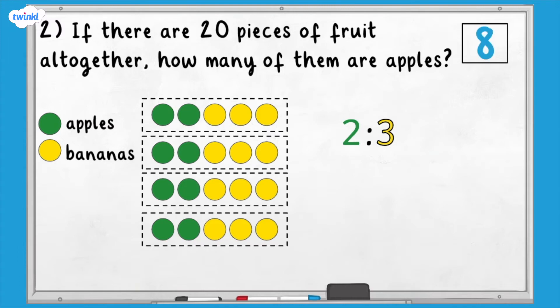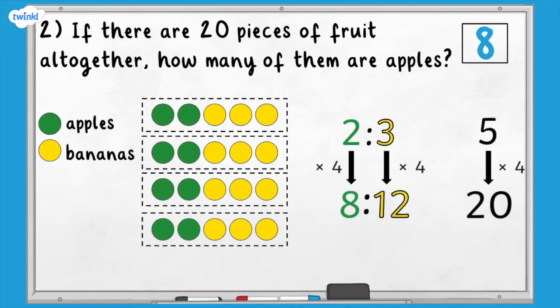This is how it would look without using the counters. We know that the total was four times greater, so we also need to multiply the numbers in the ratio by four.